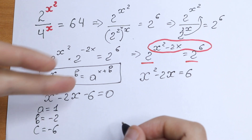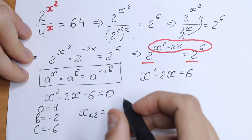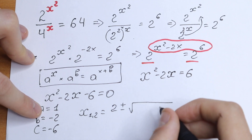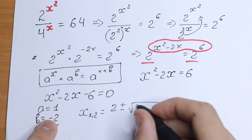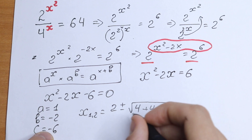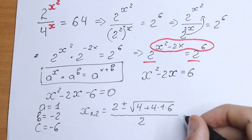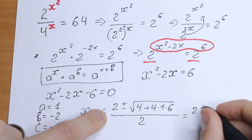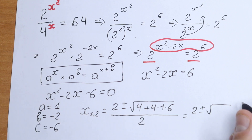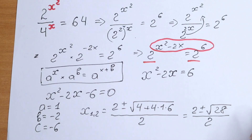We can easily find x₁ and x₂ using the quadratic formula. We have x equals minus b — which is 2 — plus or minus the square root of b squared minus 4ac. That gives us 4 minus 4 times 1 times negative 6, so 4 plus 24, which equals 28, all over 2a which is 2. So we have 2 plus or minus the square root of 28, divided by 2.